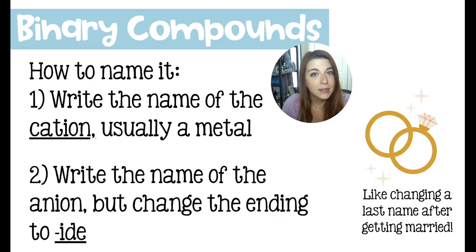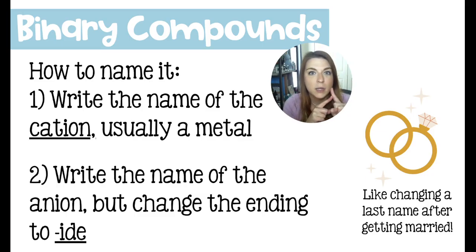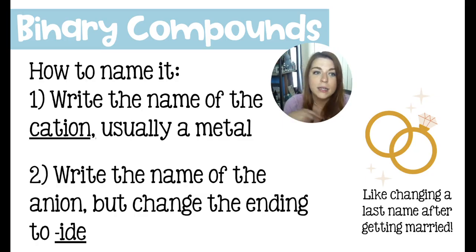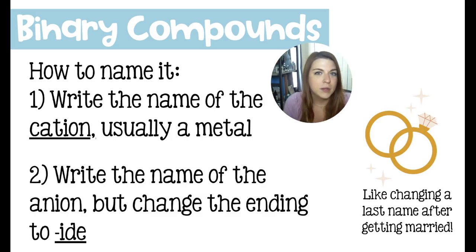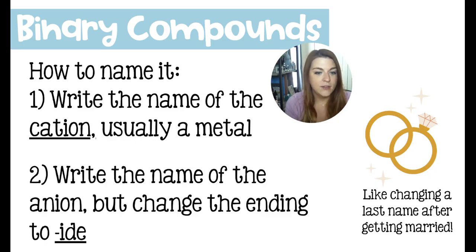Anytime we have a binary ionic compound, we name it in a specific way. Part of the reason for the rules is to indicate that the compound has ionic bonds, and in some cases to tell us the charge of a metal ion and the elements that are bonded in what ratios. To begin, we always list the name of the cation — the positive ion, which most of the time is a metal — just as it is named on the periodic table. If we had lithium bonded to chlorine, we would just say lithium. The second element is the anion, the negative ion, and we change its ending to -ide, I-D-E.